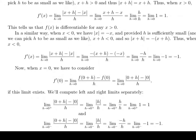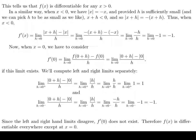For the left hand limit, we start with the same expression. Since we're picking values of h that are less than zero, we get rid of the absolute value by introducing a minus sign, which gives us negative one for the left hand limit. We got one for the right hand limit and negative one for the left hand limit — the left and right hand limits disagree, so f prime of zero does not exist. Our conclusion is that although f of x is differentiable when x is bigger than zero and less than zero, it is not differentiable at zero.